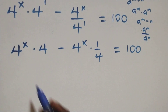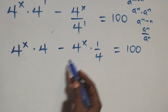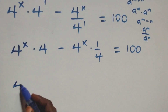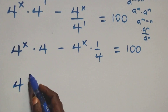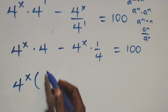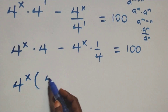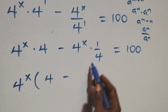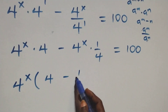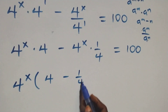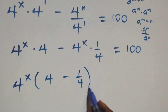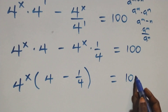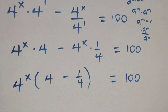At this here we have 4 raised to power x — factor it — and we have 4 raised to power x into brackets; here we are left with 4 minus 1 over 4 in the bracket, equals to 100 on this side.